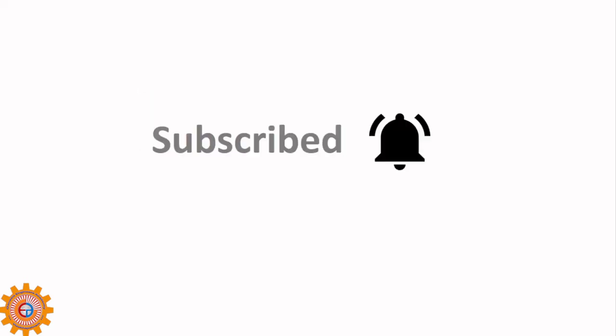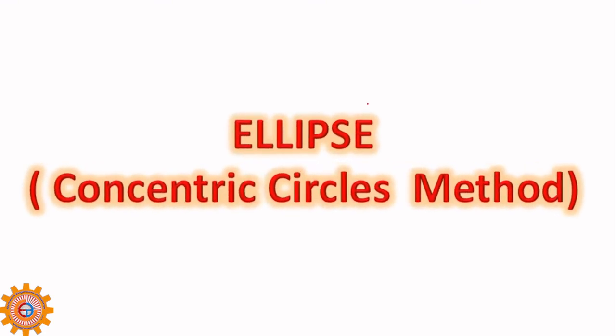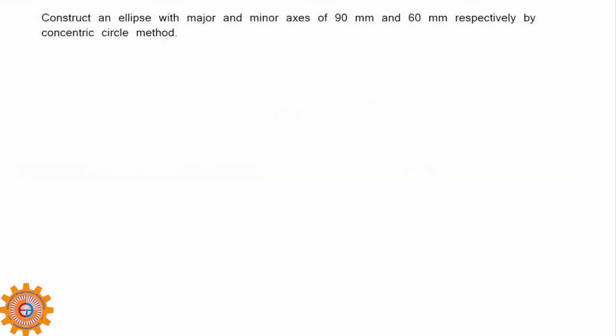Let us go to the next one, that is ellipse by concentric circles method. In this, the construction of ellipse with major axis that is 90mm and minor axis 60mm. 90mm is diameter, 60mm is diameter. First draw major axis AB, minor axis CD.